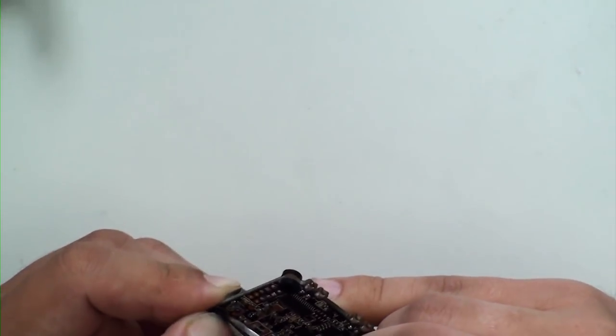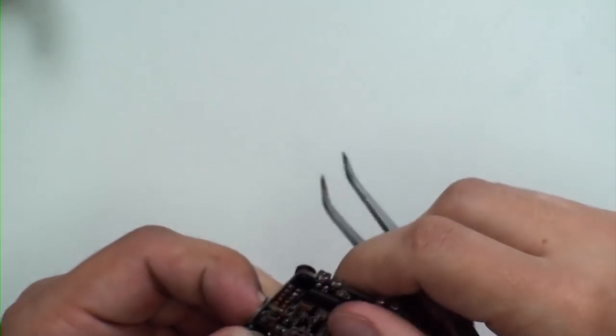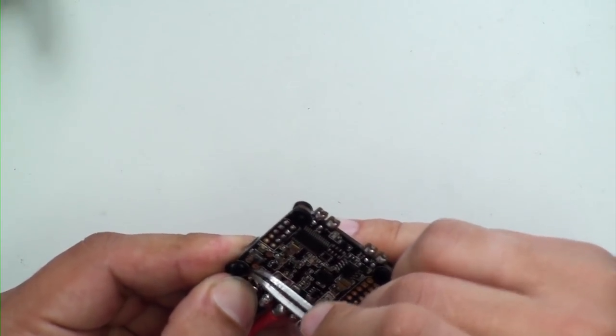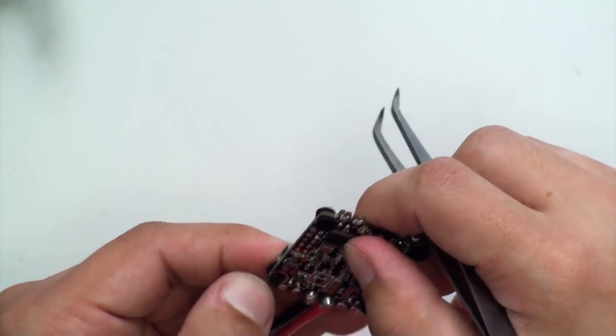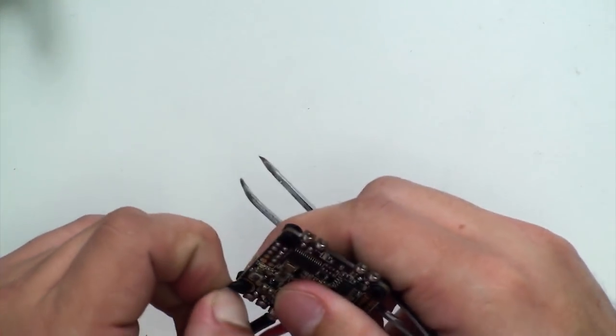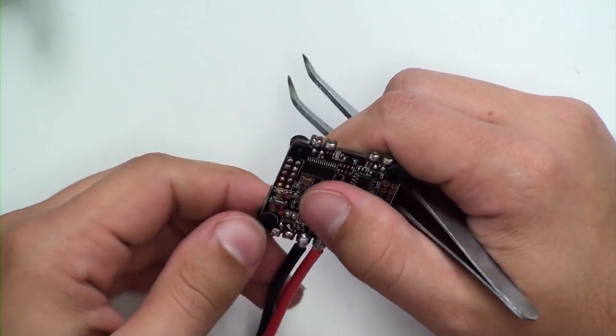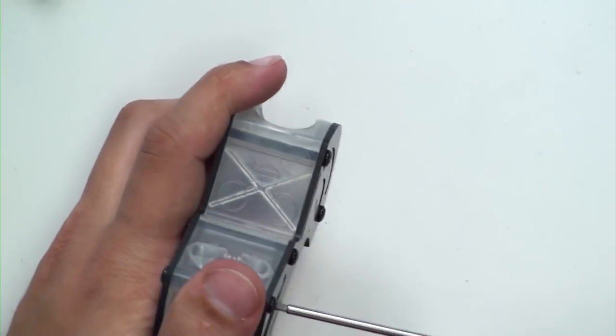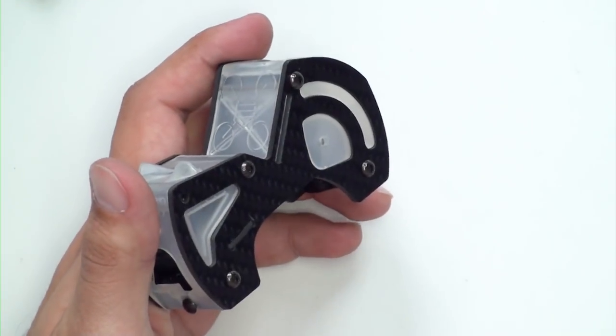Here we go. Now we can take one side plate off of the main body of the frame, and this way we're going to use this side plate as reference for spacing on the wires to the flight controller.